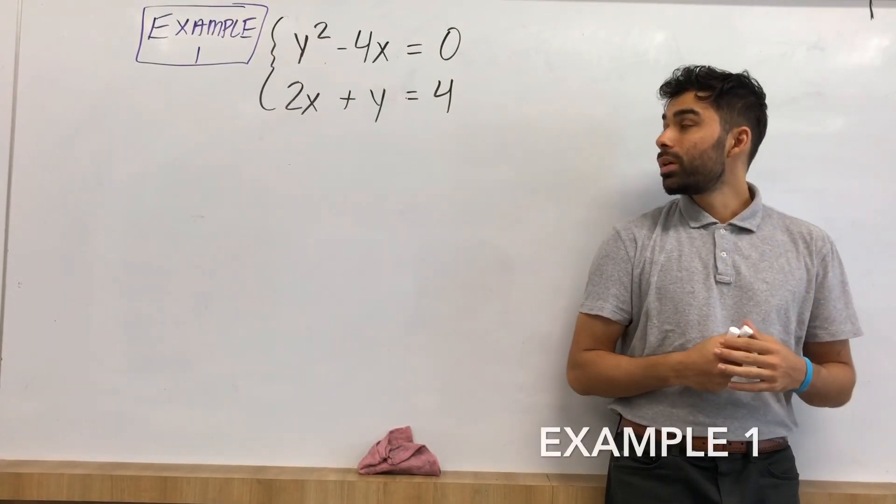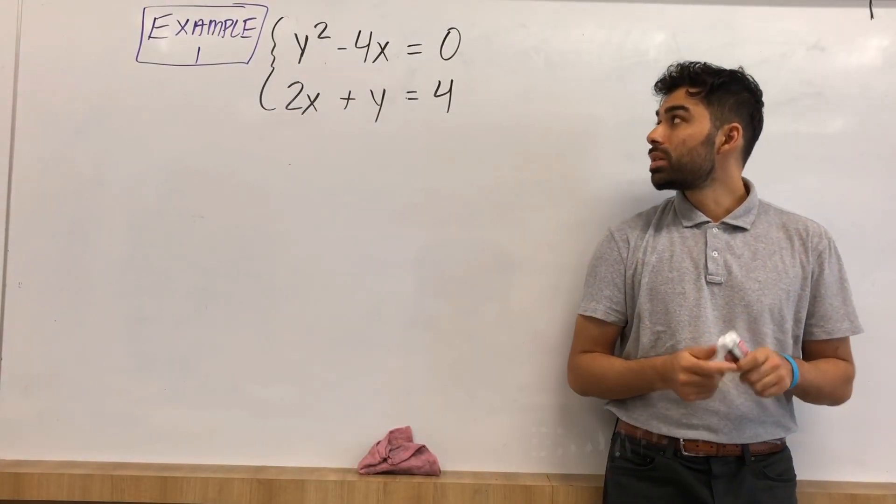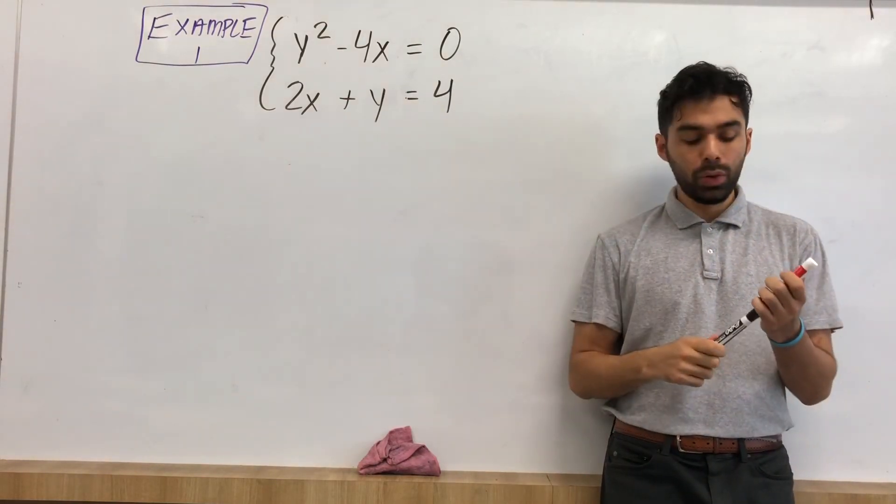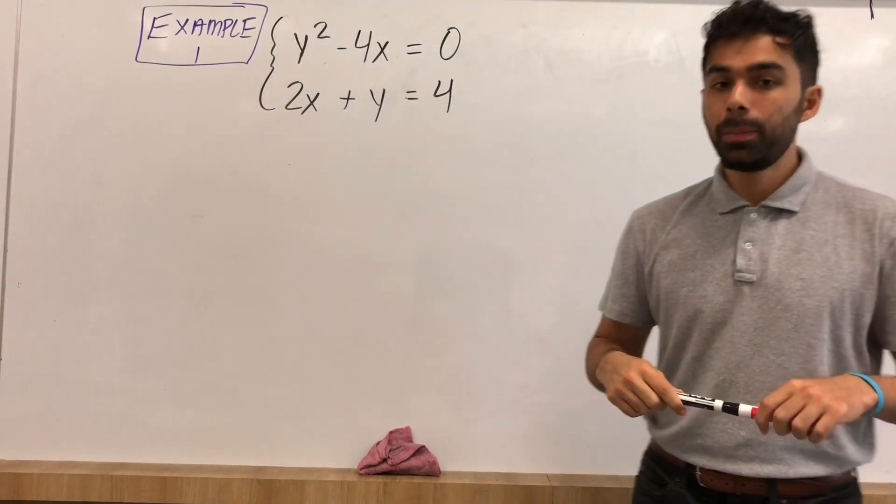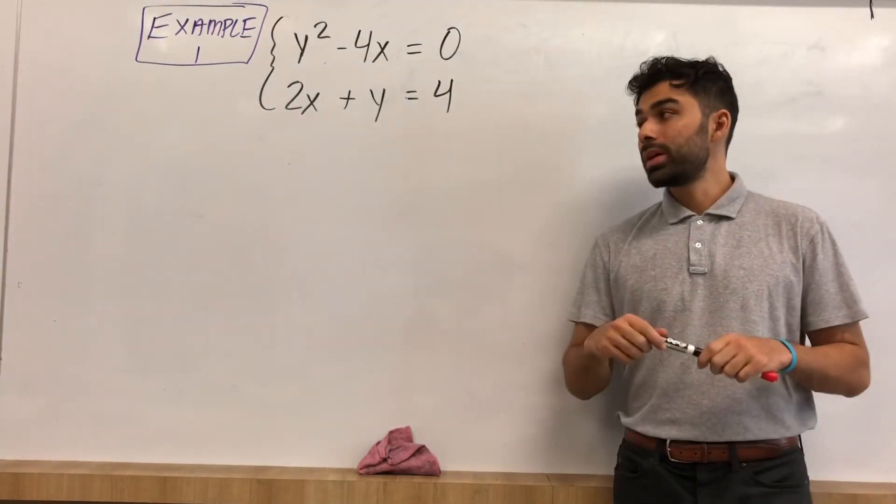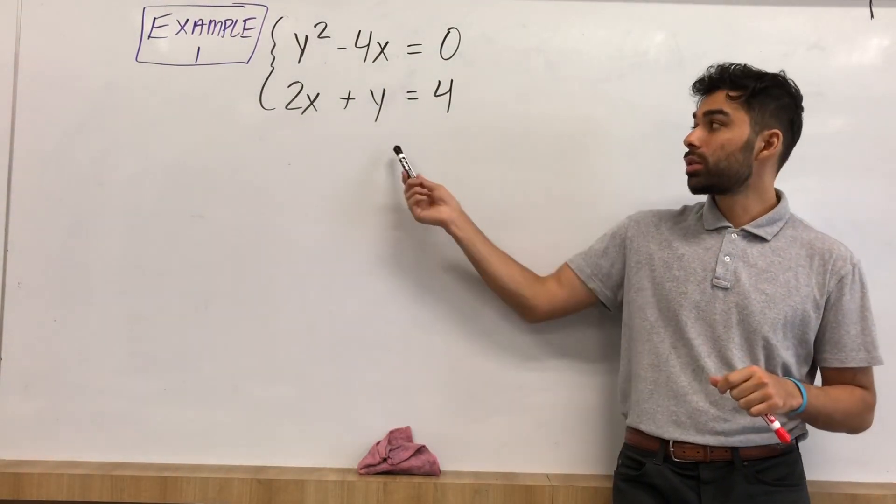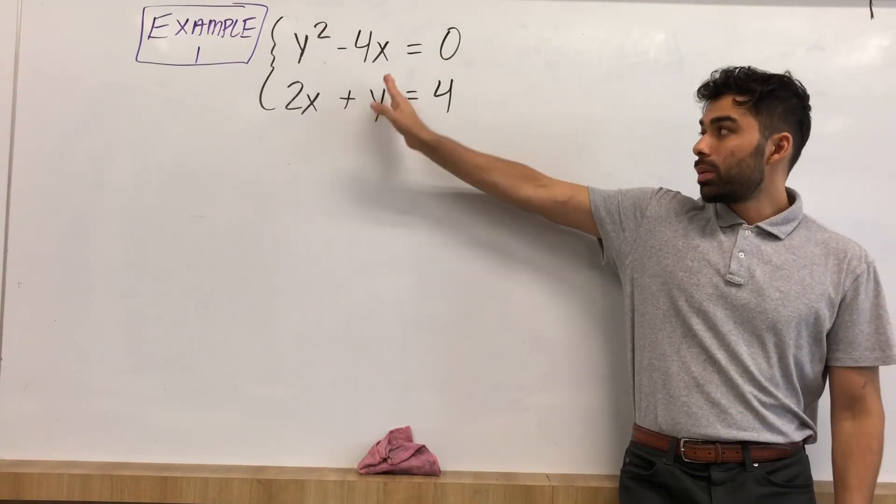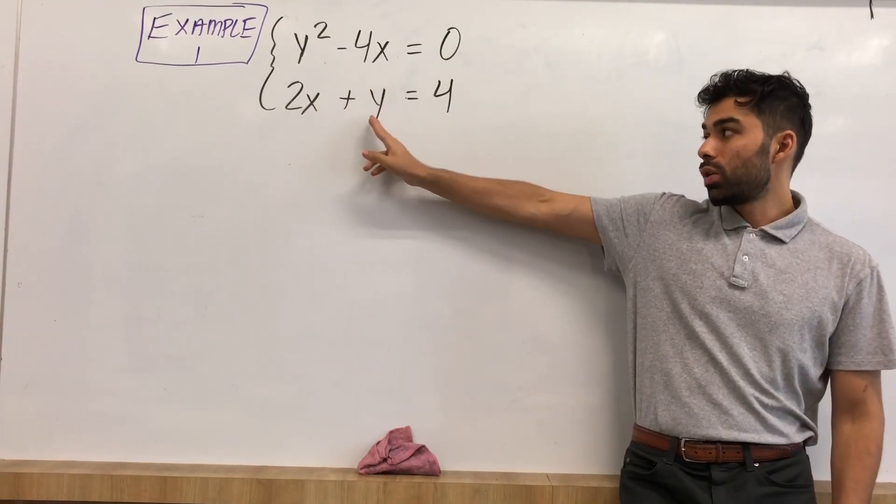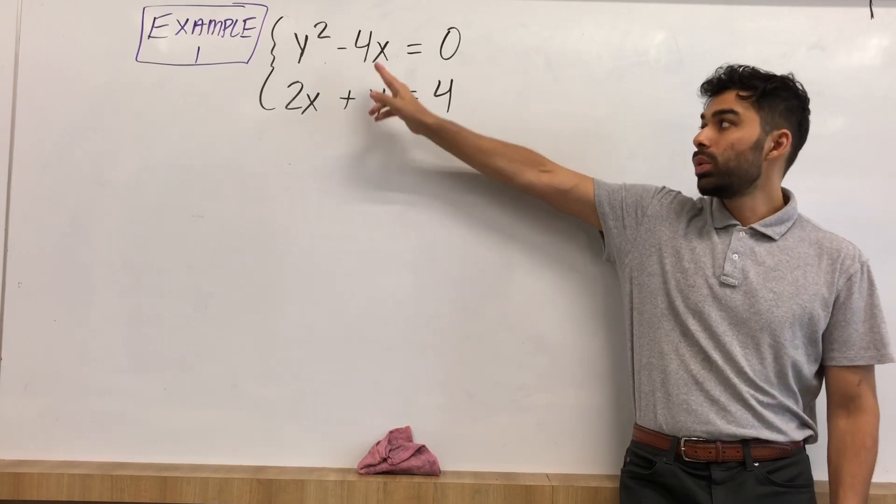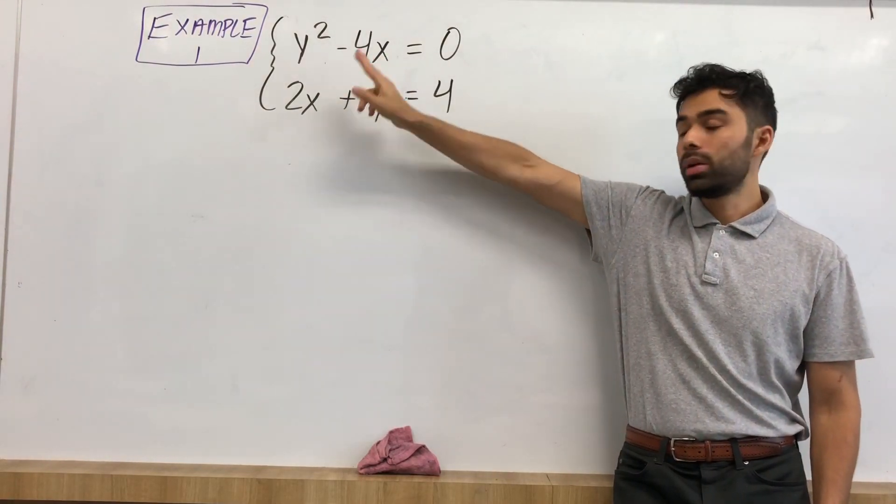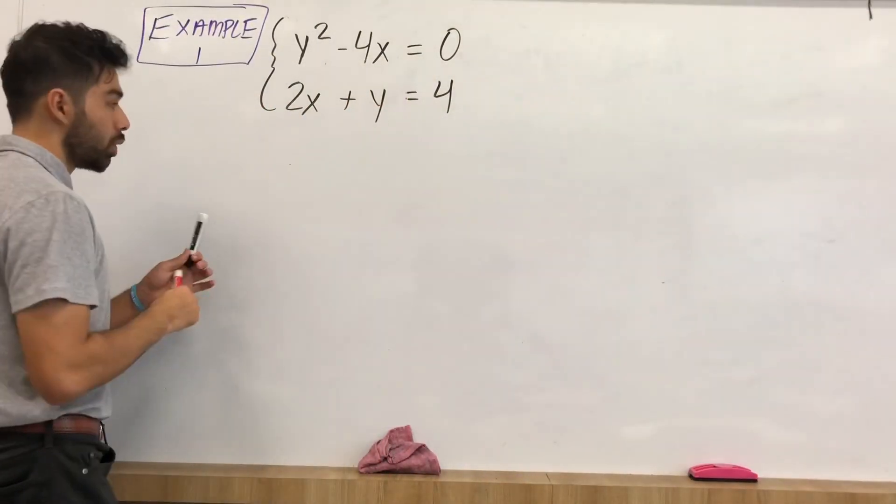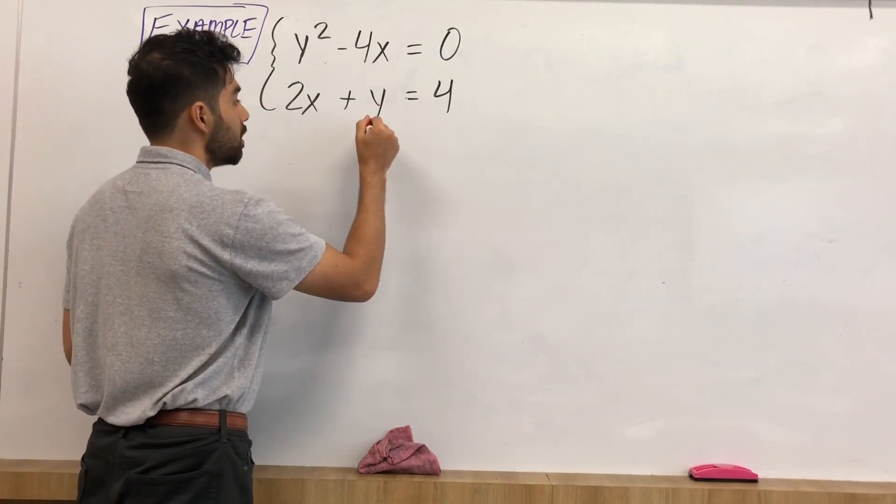Here we have example 1. We have y squared minus 4x is equal to 0, which is our nonlinear, and 2x plus y is equal to 4, which is our linear. Like I said before, the best strategy and the most practical strategy to use is to substitute. Now when it comes to both these equations, the best thing to solve for is our linear, and then we can substitute it back into our nonlinear. So let's go ahead and solve. The best thing to solve is just for our y, since it's y itself.